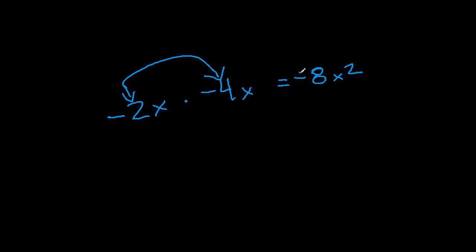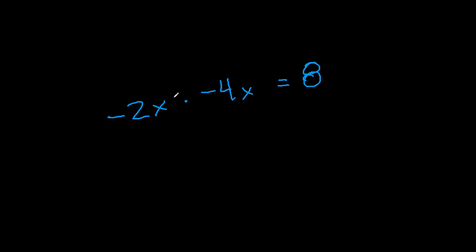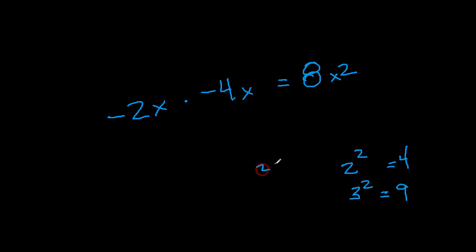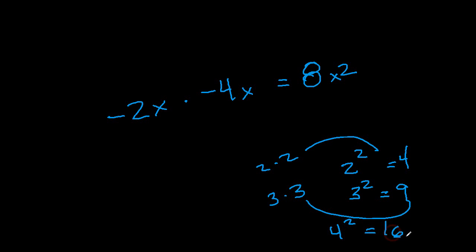If we took negative 2x and we wanted to multiply it with a negative 4x, we would end up with positive 8x squared. A common mistake is to forget: negative 2 times negative 4 is positive 8, not negative 8 — so you definitely need to keep your eye out for that. And then x times x is x squared. For example, if we had 2 squared, that would be 4; 3 squared would be 9, because that equals 3 times 3; 4 squared would be 16.